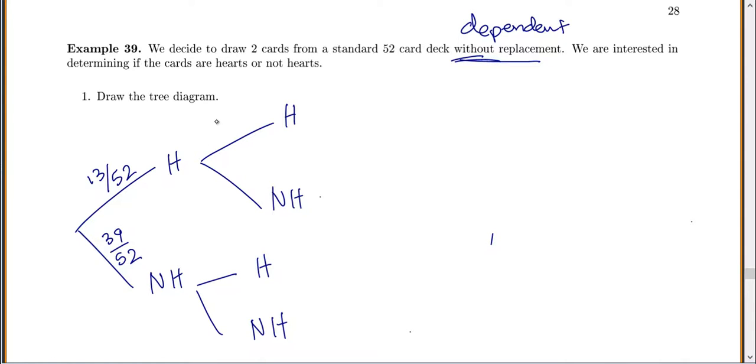Now I drew one heart out. If I want to get another heart, I would only have 12 hearts and only 51 cards. For a not heart, there would still be 39 not hearts, but only 51 cards. If I drew a not heart first and then I want a heart, there would still be 13 hearts but only 51 cards. If I drew a not heart first and I want another not heart, there are now only 38 not hearts and only 51 cards.